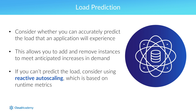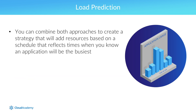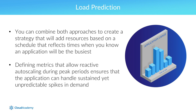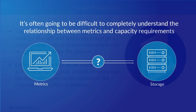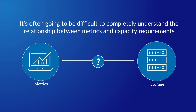Reactive autoscaling offers the ability to handle unpredictable changes in demand for an application. You can also combine both approaches to create a strategy that adds resources based on a schedule reflecting times when you know an application will be the busiest. This ensures that capacity is available when required without causing delay from the startup of new instances. By defining metrics that allow reactive autoscaling during peak periods, you can handle sustained yet unpredictable spikes in demand.